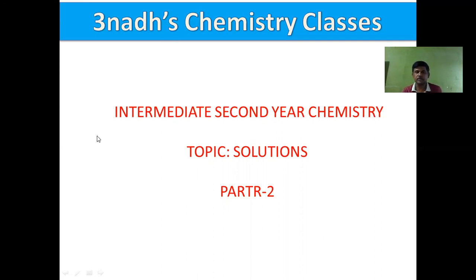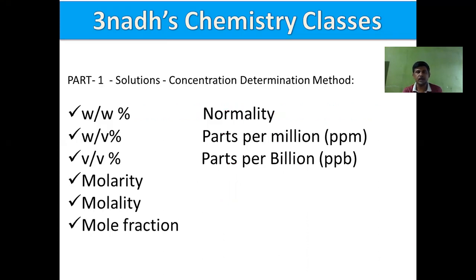This channel is meant for chemistry classes. This is my second lecture on intermediate secondary chemistry topic: Solutions, Part 2. Previously in Part 1, we covered what a solution is, the various types of solutions, and how to determine the concentration of a solution using methods such as weight by weight percent, weight by volume percent, volume by volume percent, molality, and mole fraction. Today we will cover three more methods for determining concentration: normality, parts per million, and parts per billion.